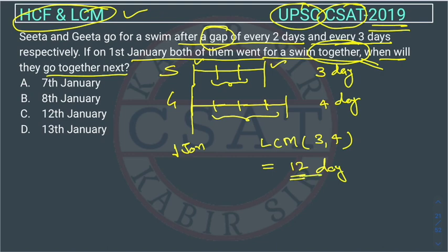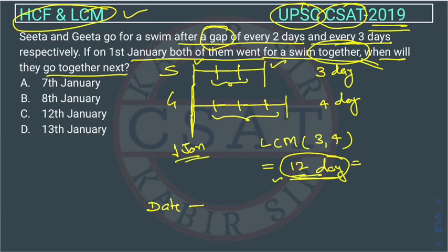So they will go together on the 12th day or a multiple of the 12th day. What is the date on the 12th day? Here you can see 1st January — both are going. If this is 1st Jan, this is 2nd, 3rd, 4th. We consider the 4th as the 3rd day. So after the 12th day, we add 1 because on the 1st day they are going, and after that the 12th day — so it becomes the 13th date. They will go on 13th January.